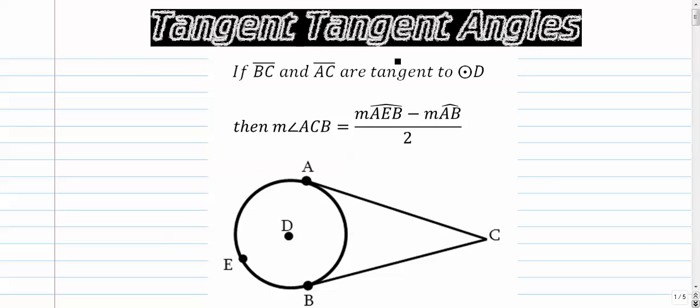Next up, tangent tangent angles. Alright, so this one has some tricks to it. We have the angle is equal to, we've seen this a little bit before, the far away arc minus the close arc over 2. But in this case, we've got a tangent and a tangent coming together.